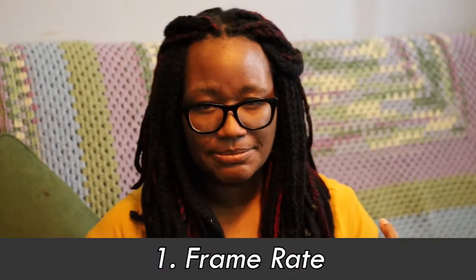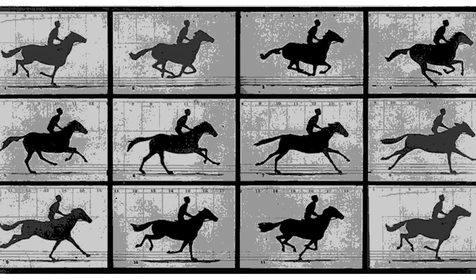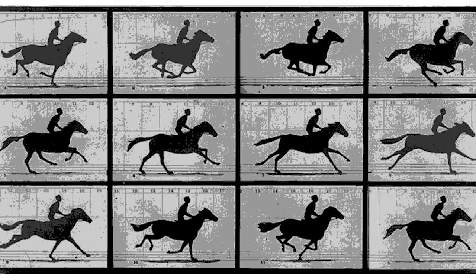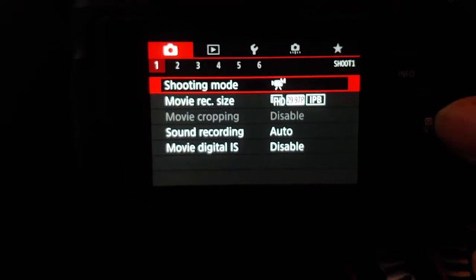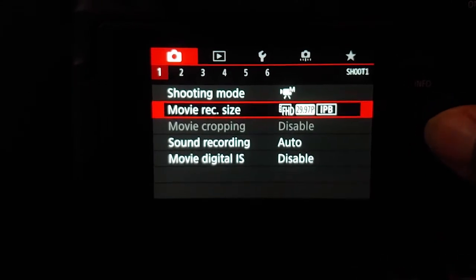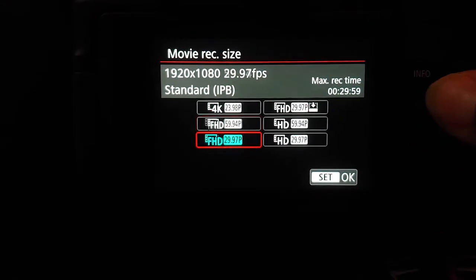Frame rate is measured in FPS, or frames per second, which basically means that's how many frames are being filmed in a second. Let's get scientific real quick: the human eye processes things we see in a sequence of images, so what we may feel like is a static shot is actually taking our eye 10 to 12 images a second to put together, and then we perceive that as an individual image. You can get to your frame rate settings on your camera by going here, and it'll show up on your display as well.